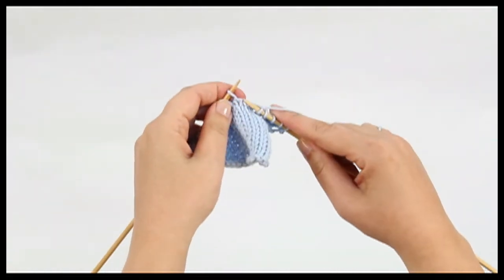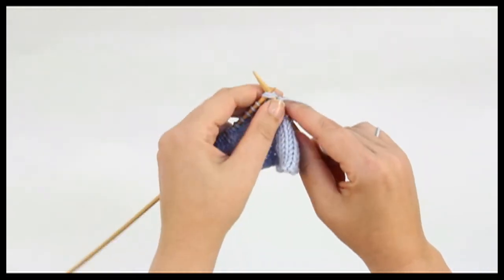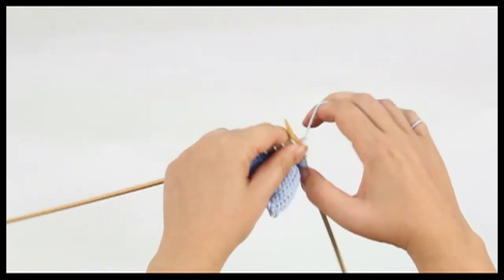When you reach the wrapped stitch, you will place your needle into the stitch but taking it first underneath this bar. This will give you two loops on your needle.